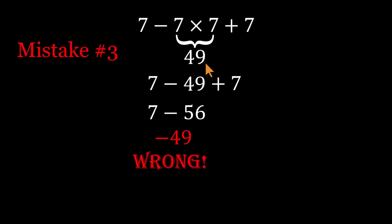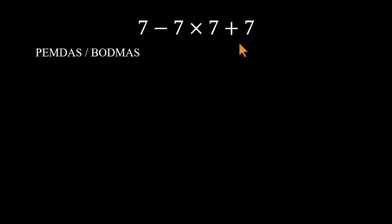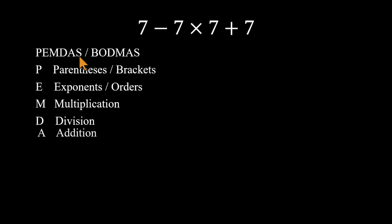So what's really happening here? It all comes down to the order of operations, often remembered as PEMDAS or BODMAS. That stands for parentheses or brackets first, then exponents, multiplication, division, addition, and subtraction.